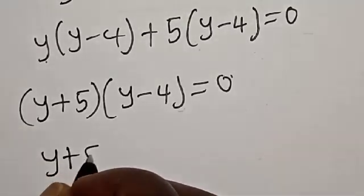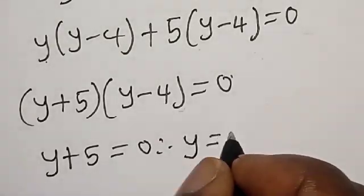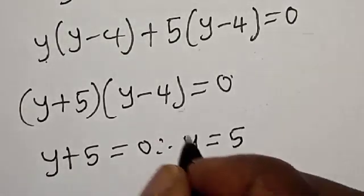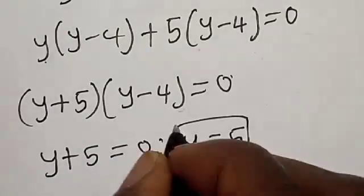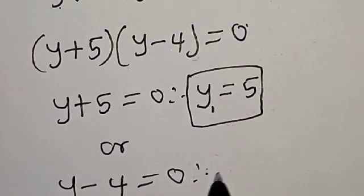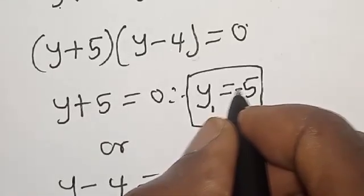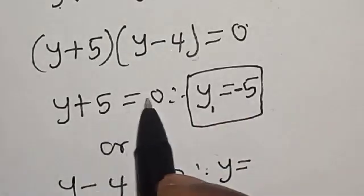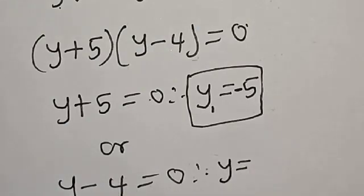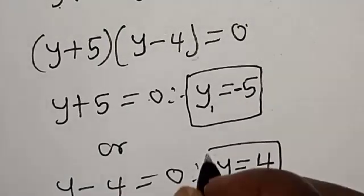Y plus 5 equals 0, therefore Y equals negative 5. Let's call this Y1. Or Y minus 4 equals 0, therefore Y equals 4. Let's call this Y2. So the values of Y are minus 5 and 4.